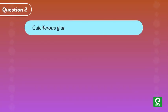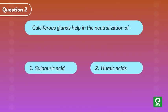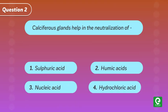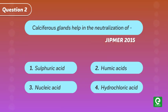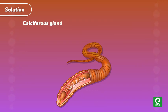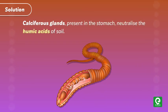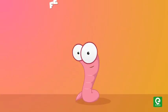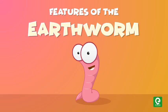Question 2: Calciferous glands help in the neutralization of which acid? Options: (1) sulfuric acid, (2) humic acids, (3) nucleic acid, (4) hydrochloric acid. This question was asked in JIPMER 2015. Solution: Calciferous glands present in the stomach neutralize the humic acids of the soil. Hence, option two is correct. This concludes our video on the features of earthworms.